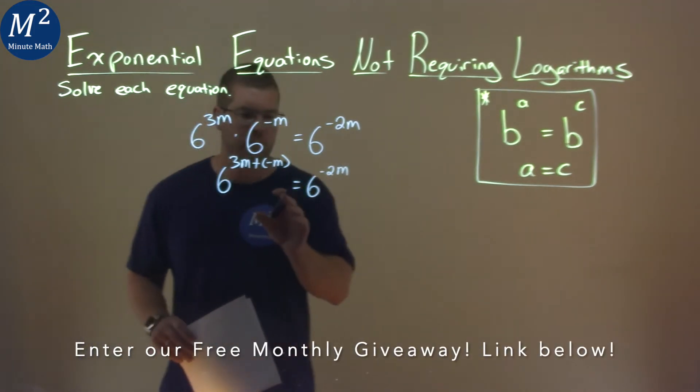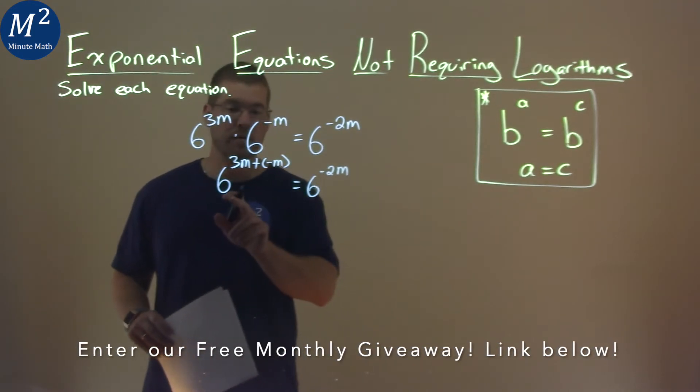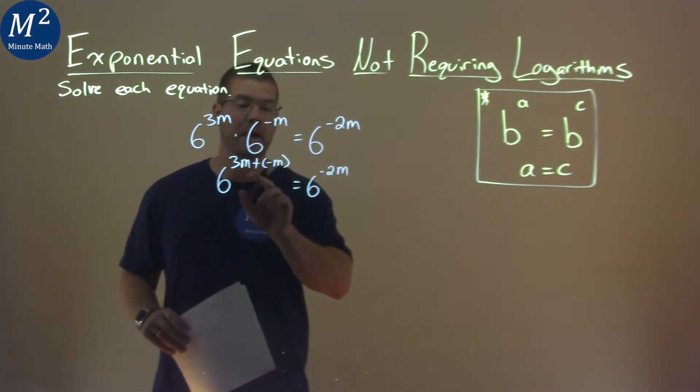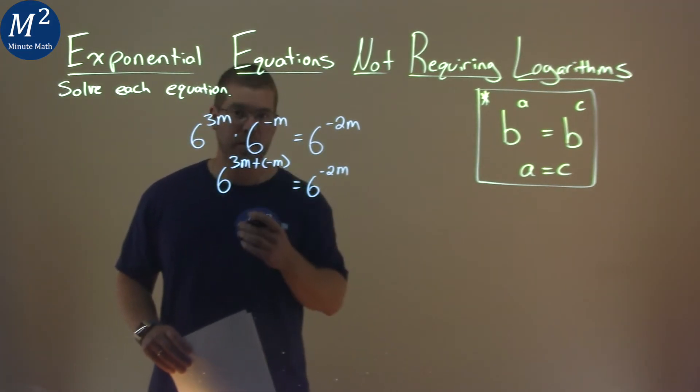Now we have on each side of the equal sign the same base of 6, and it's being raised to some exponent. When that happens, we can take our exponents and set them equal to each other.